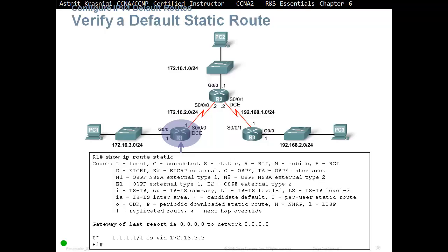When we do 'show ip route static', we can see the default route with code S* — S for static route and the star indicating it's a candidate to be the default route. For example: S* 0.0.0.0/0 via 172.16.2.2, which is the next hop IP address. The router then needs to do another lookup to find the exit interface to reach that IP address.